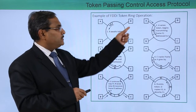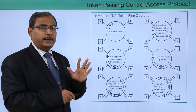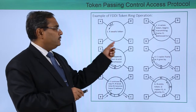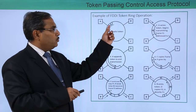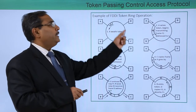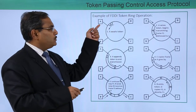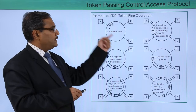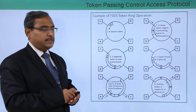Here how many stations are we having? Four stations: A, B, C, D. They are connected in a ring topology and there is one token T rotating in this particular network. A wants to send some information to node C.